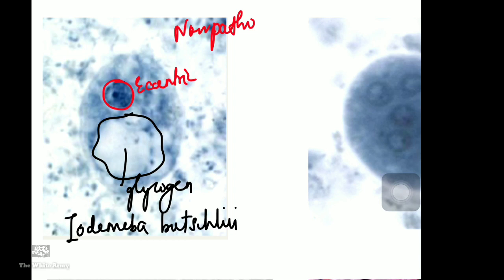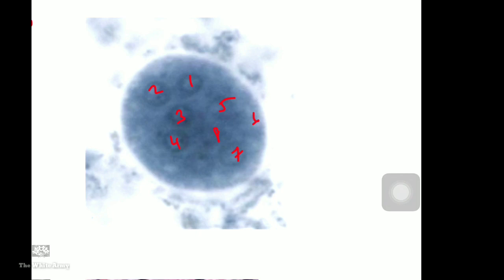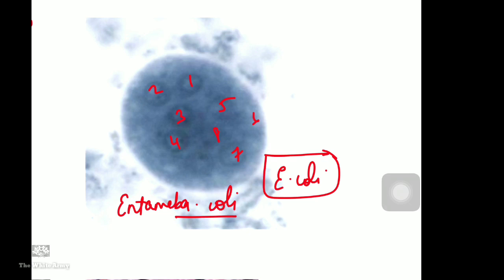An eccentric nucleus with a highly pale cytoplasm made up of glycogen — when stained with iodine — gives the name Iodamoeba butschlii. Another species seen here with eight nuclei in the cyst is Entamoeba coli (eight-nucleate cyst). This is why we should not write just 'E. coli', since it could mean Escherichia coli or Entamoeba coli.